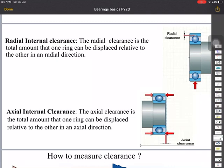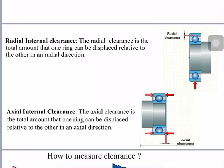In bearing clearance there are mainly two types: one is radial internal clearance, and the second is axial internal clearance. Clearance is the clearance between the rollers and the raceway. In case of radial internal clearance, it is the total amount that one ring can be displaced relative to the other in the radial direction — there is play in the vertical direction and you can move the shaft vertically. In axial internal clearance, one ring can be displaced relative to the other in the axial direction — you can move the shaft axially.